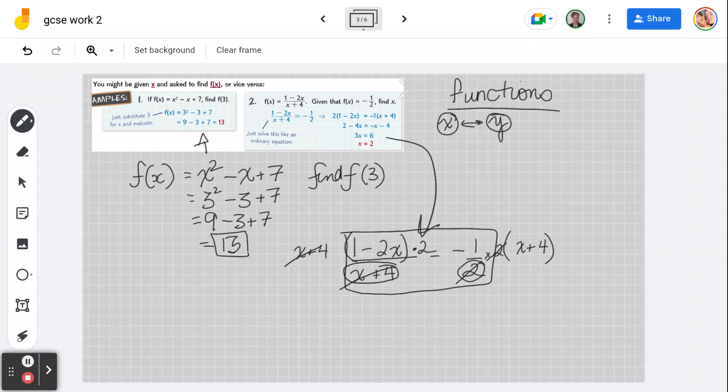So now we have, let me just rewrite it so we can see it. We have 1 minus 2x times 2 equals negative 1 times x plus 4. See how I've just basically cross-multiplied that so that I don't have fractions. So now let's do our distributive property. 2 times 1 is 2. 2 times negative 2x is negative 4x equals negative 1 times x is negative x. Negative 1 times 4 is negative 4.